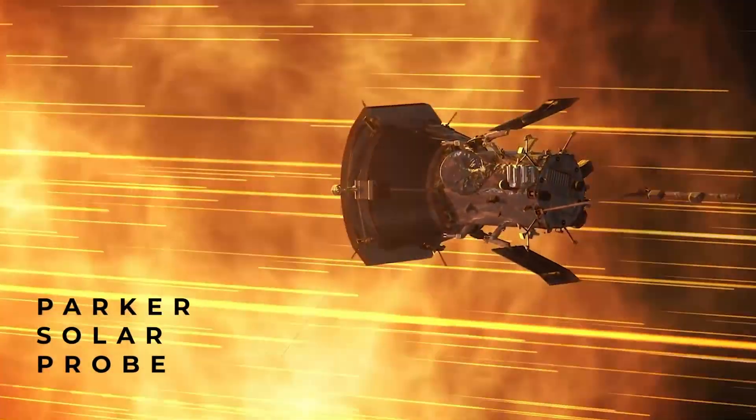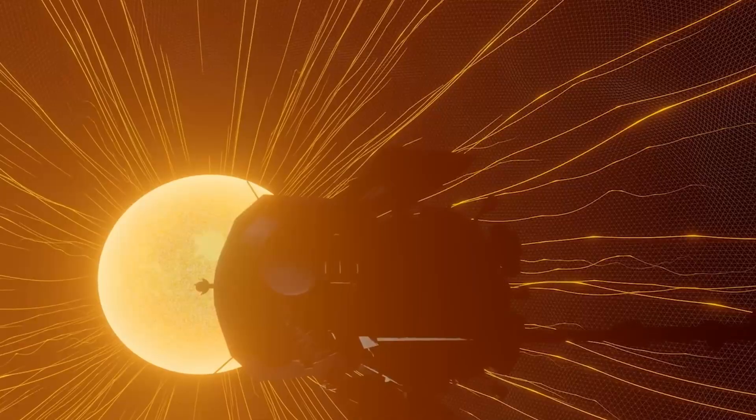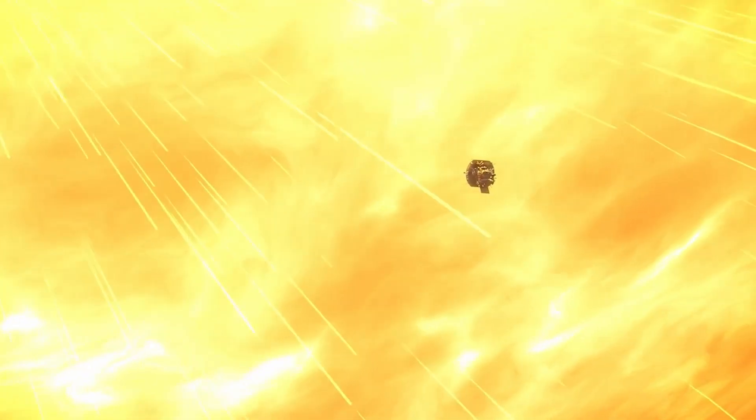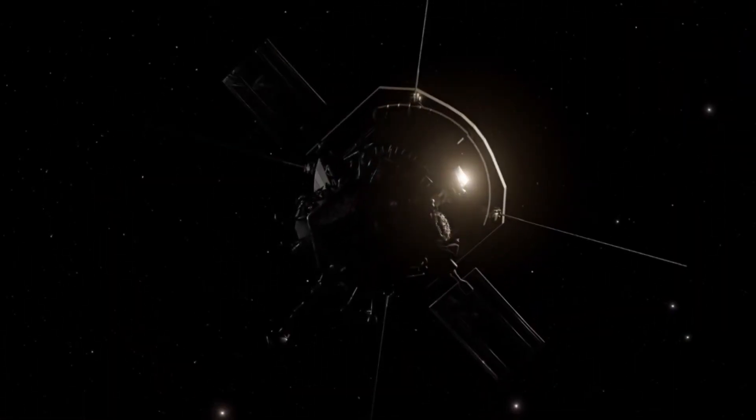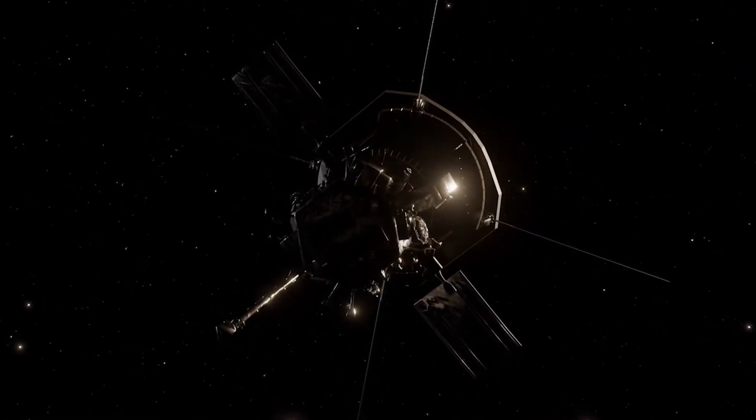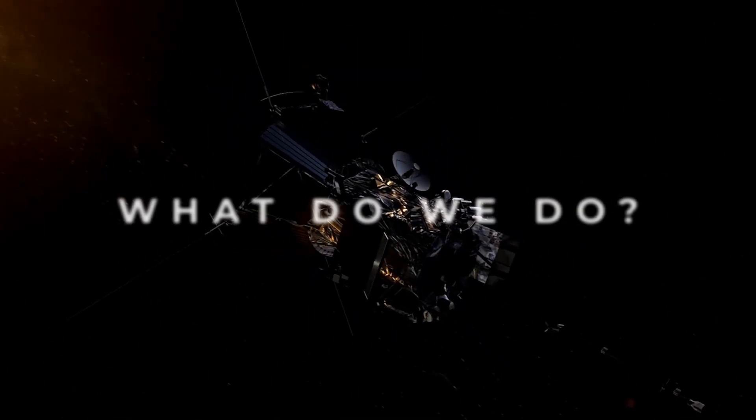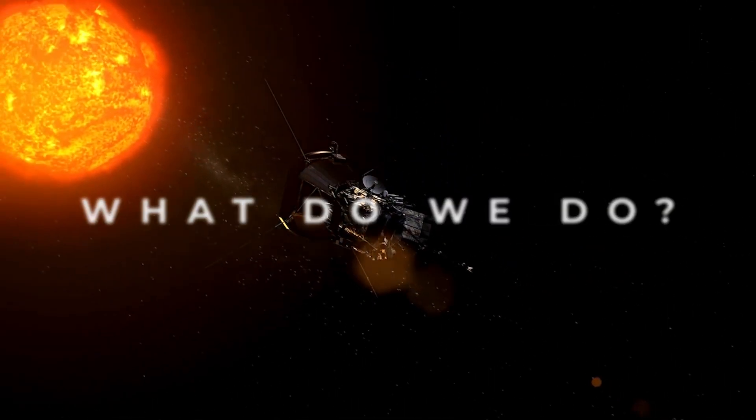For example, the Parker Solar Probe managed to develop a speed of almost 700,000 kilometers per hour. Undoubtedly, this is an incredible speed, but unfortunately, people have not yet learned to build rockets with such speeds, and the usual probe cannot put a man in it. What do we do? Can we get faster, though not to other stars, but at least to the nearest planets?